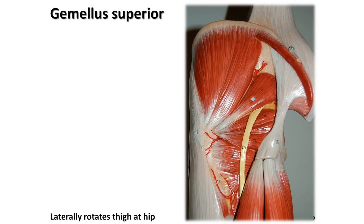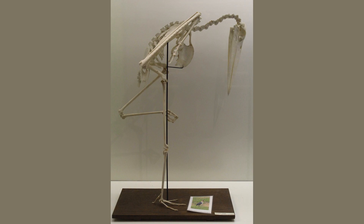The human skeletal system consists of 206 bones, which are divided into two main categories: axial and appendicular. The axial skeleton includes the skull, vertebral column and rib cage, while the appendicular skeleton includes the bones of the arms, legs, pelvis and shoulder girdle.